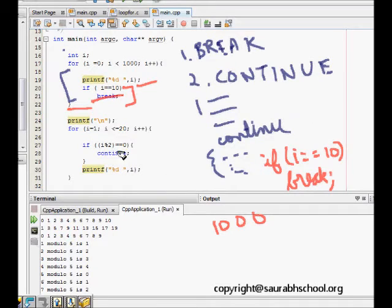If we see the output, zero, one, two, three, four till ten is printed. After that, it could have gone till one thousand or 999, but it stops here because the condition is met and the break is executed, coming out of the for loop. Then it prints a new line.